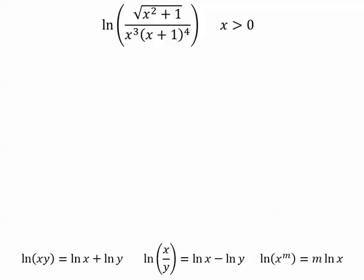Let's go backwards. Write the expression as the sum and difference of logs and express all powers as factors. The log of the quotient is the difference of the logs.